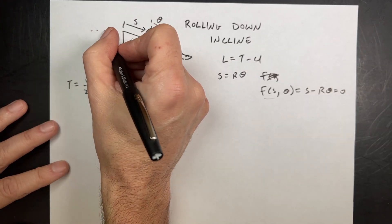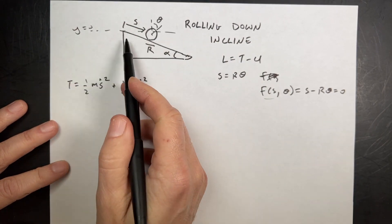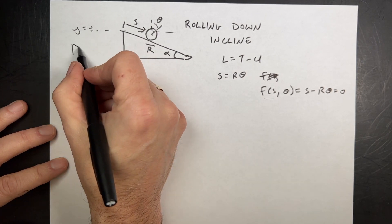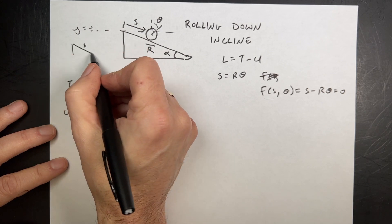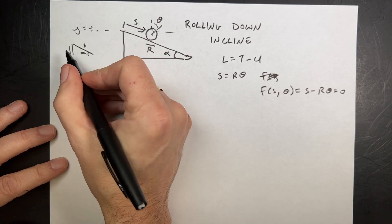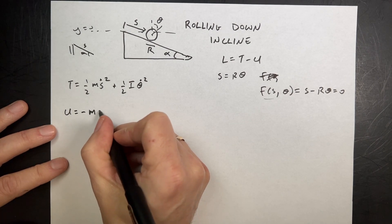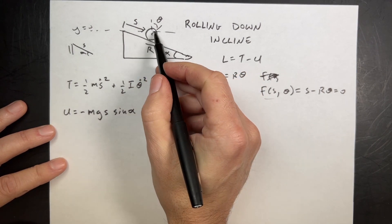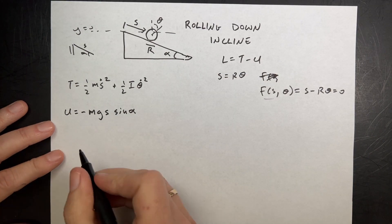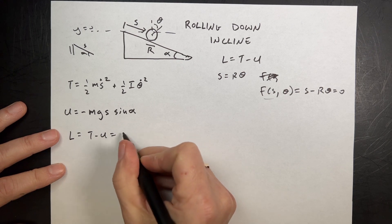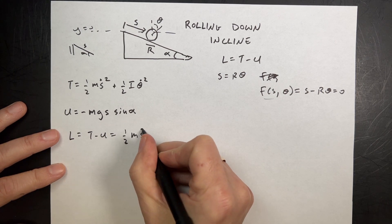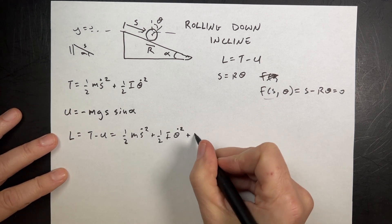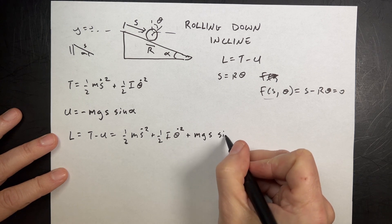Now for the potential energy: I'm going to call the top y equals zero. The potential energy term is the distance of the center below that. If you think about distance S down the incline at angle alpha, the vertical drop is S·sinα, so the potential energy is negative M·G·S·sinα. So now the Lagrangian L equals T minus U: one-half M·S-dot squared plus one-half I·theta-dot squared plus M·G·S·sinα.